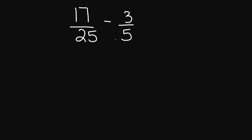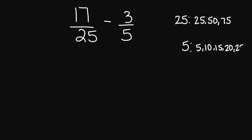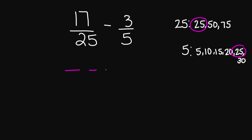Let's try 17 over 25 minus 3 over 5. My denominators are not the same, so I do need to find a common denominator. We're going to list the multiples of 25: 25, 50, 75. For my 5: 5, 10, 15, 20, 25, 30. My lowest common multiple between 25 and 5 is going to be 25. I already have 25 in my denominator for 17 over 25, so I multiply top and bottom by 1.